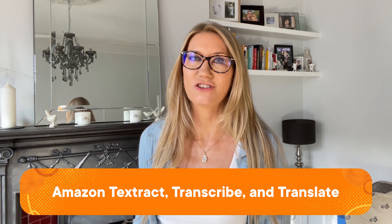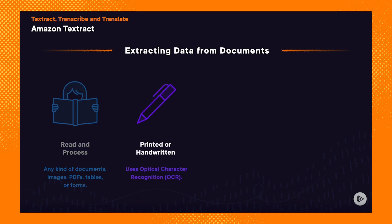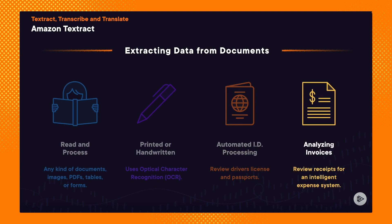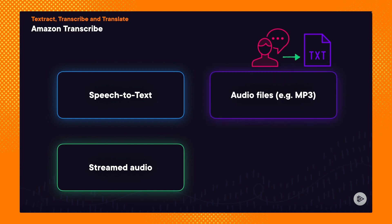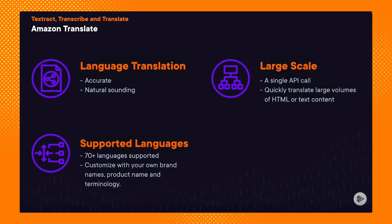Finally, there's Textract, Transcribe, and Translate — three similar sounding services that use machine learning to process text. Amazon Textract is used to extract text data from any kind of document, like PDFs, images, tables, or forms — printed or even handwritten text. For example, it could be used to verify identity documents like a passport or driving license for a bank loan application. Amazon Transcribe is a speech-to-text service that takes speech or audio as input and transcribes it to text that can be streamed or stored as an audio file; use cases include automatically generating subtitles or creating meeting notes. Amazon Translate uses machine learning to perform accurate, natural sounding language translation, supporting over 70 different languages, and you can customize it to include your own product names, brand names, or specific terminology.